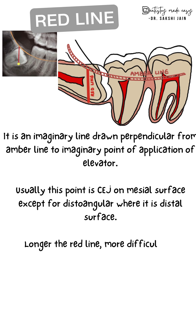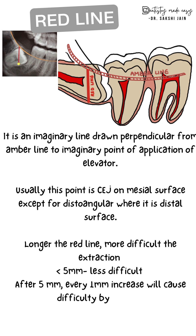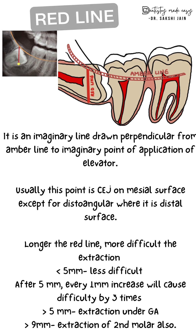The longer the red line, the more difficult it is to extract the tooth. If it is less than 5 millimeters, extraction is less difficult. After 5 millimeters, every additional 1 millimeter increases the difficulty level by three times. If it is more than 5 millimeters, extraction is done under general anesthesia, and if it is more than 9 millimeters, it is very difficult and extraction of the adjacent tooth may also be required.